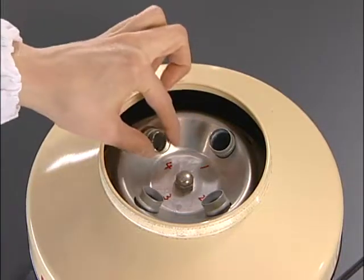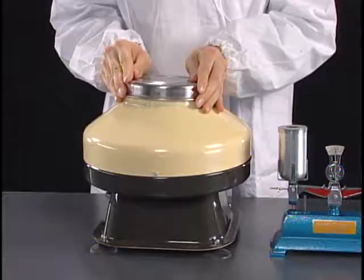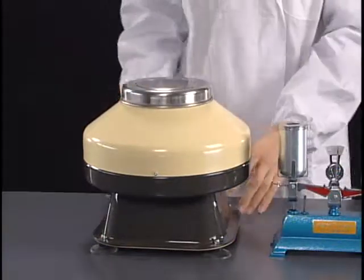Insert the pair of tubes in two holders located at opposite positions in the rotor. Close the cover tightly.